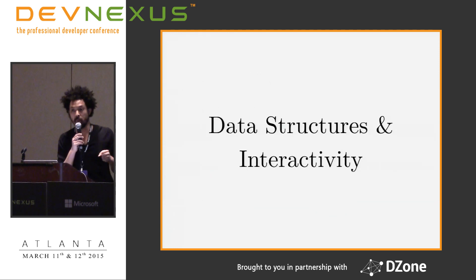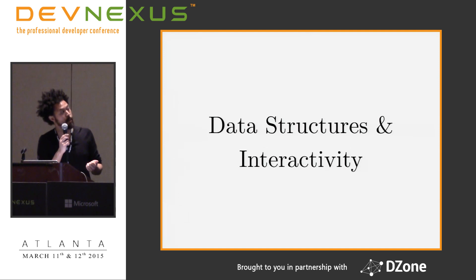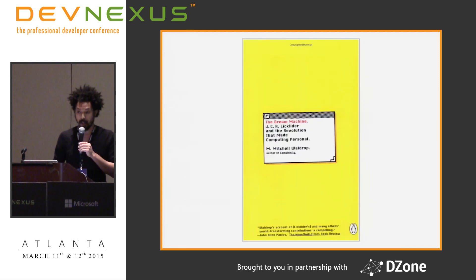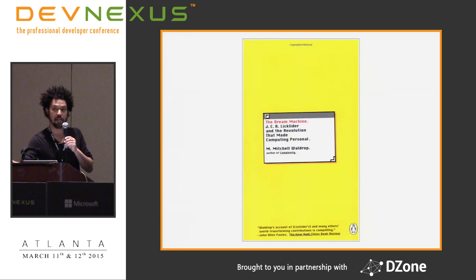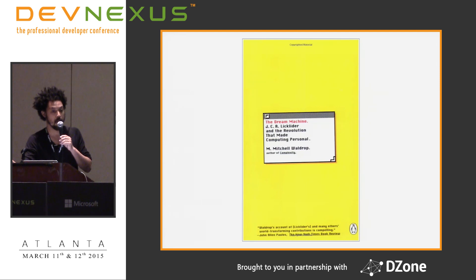ClojureScript takes two things very seriously that aren't the case for a lot of other options: data structures are huge, and interactivity is a very big thing. I highly recommend, if you're not familiar with the history of Lisp, reading a book called The Dream Machine. It's about J.C.R. Licklider, who led DARPA. He funded people like Douglas Engelbart, who invented video conferencing, word processing, the mouse, and more — the mother of all demos.